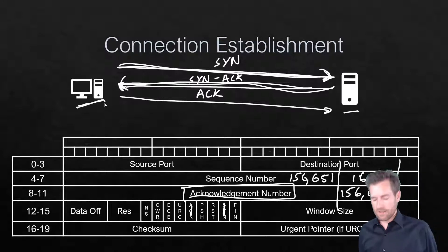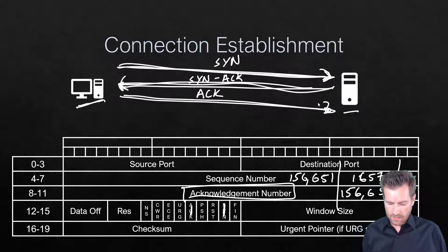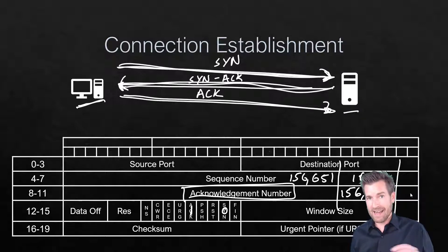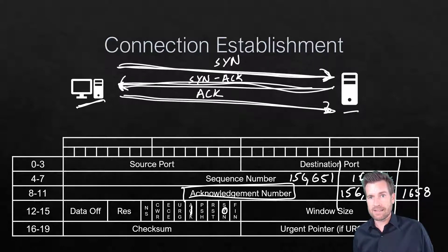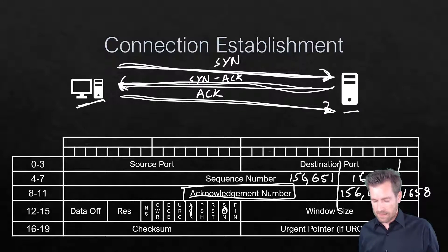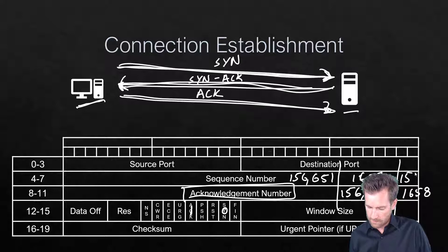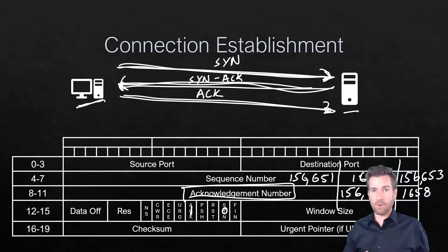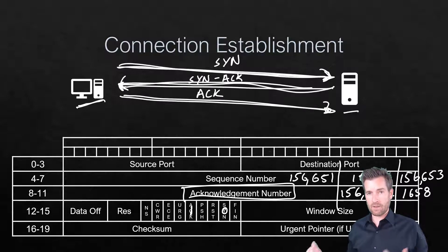The PC sends the final acknowledgement with a zero in the SYN flag, indicating they are now synchronized. The acknowledgement number is set to 1,658, which is the next byte it's expecting from the server. Its own next sequence number is 156,653. At that point, both parties have agreed to communicate, established their sequence numbers, and can now transfer the rest of the data.